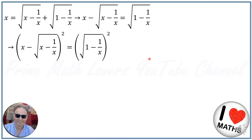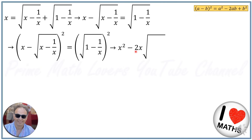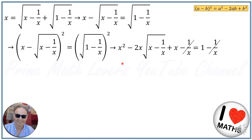From the Newton-Pascal binomial expansion formula, we know that (a minus b) squared is equal to a squared minus 2ab plus b squared. So we will have x squared minus 2 times x times square root of (x minus 1 over x) plus b squared, which gives us x minus 1 over x. On the other side we have 1 minus 1 over x. We can cancel both negative 1 over x terms from both sides.